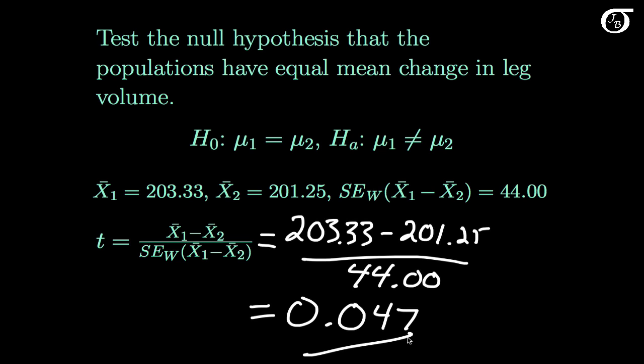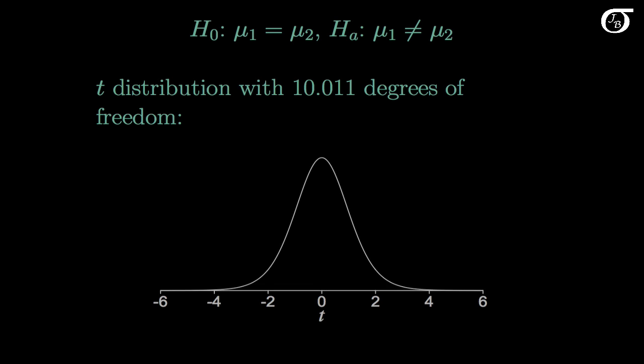Let's see what that looks like on the t-distribution. Here's the t-distribution with the appropriate degrees of freedom of 10.011. And our value of 0.047 is right around there. 0.047, right in the middle of the distribution.